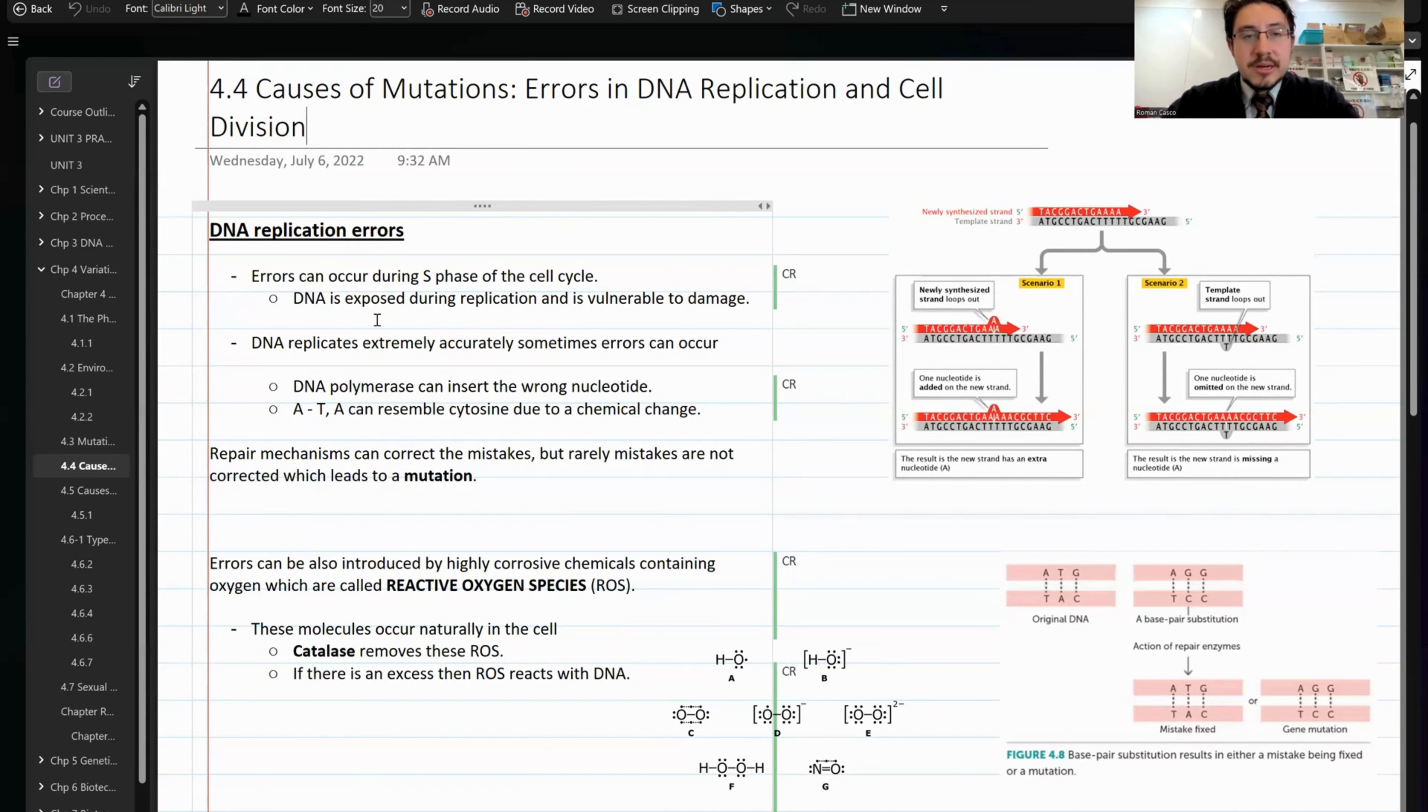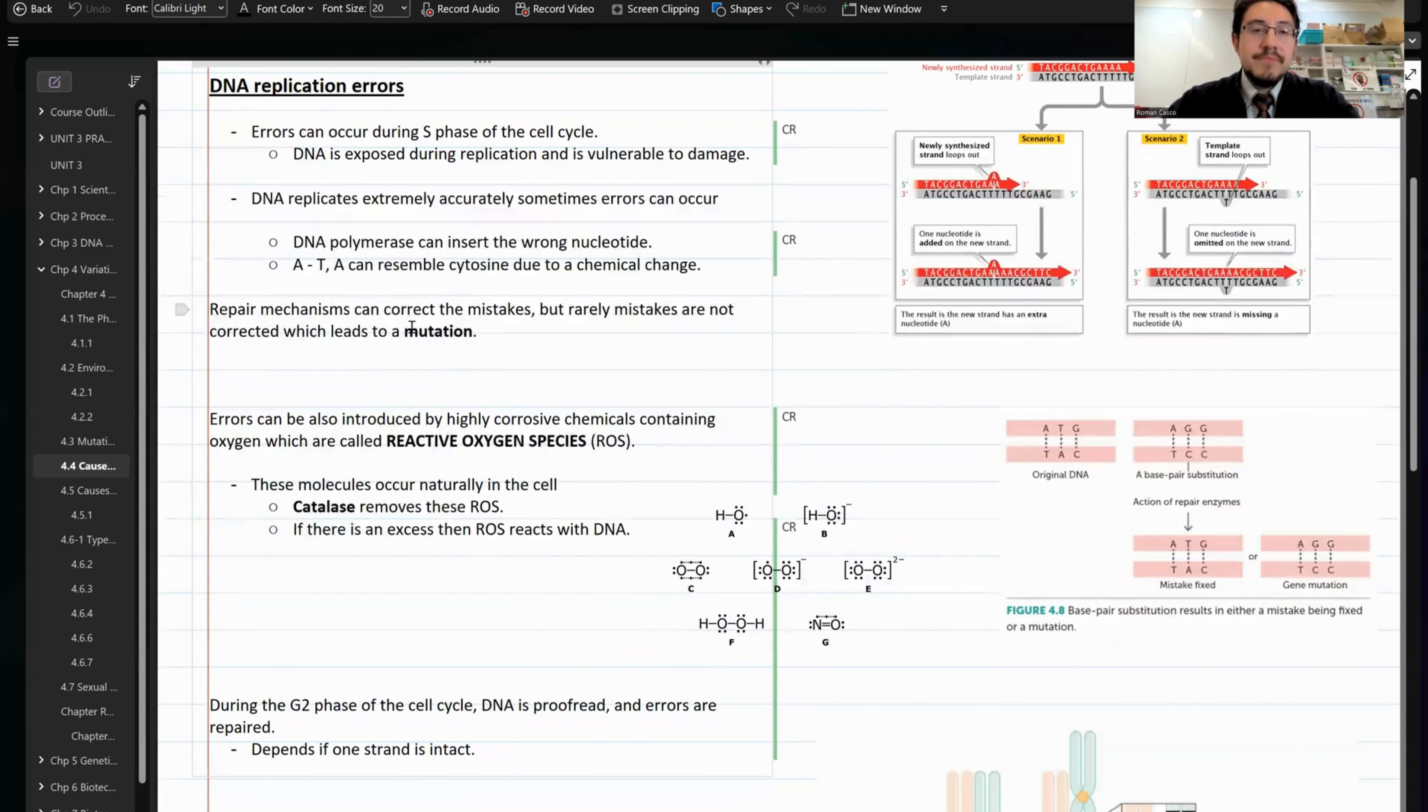It usually occurs during the S phase of the cell cycle. DNA isn't foolproof. What happens is that DNA polymerase can insert a wrong nucleotide or there's even a bend inside the newly forming DNA strand. Sometimes there's a replacement. These are referred to as DNA replication errors. Ultimately, whenever the mistake doesn't get fixed, that's what you call a mutation.